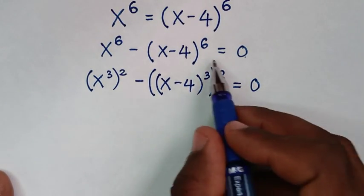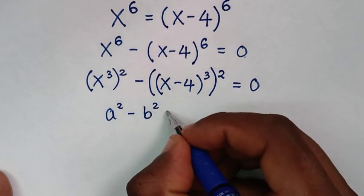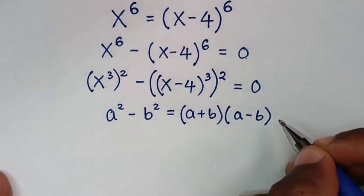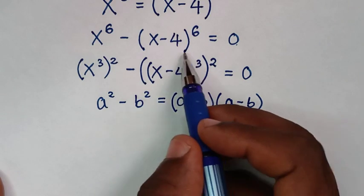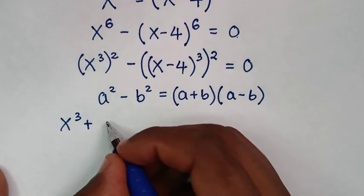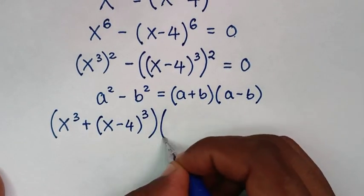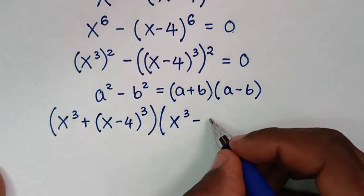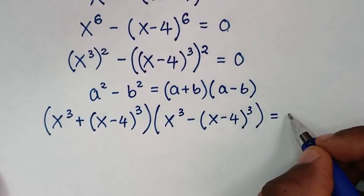Now this is in the form of a perfect square, so we'll apply the difference of squares rule: a squared minus b squared equals (a plus b)(a minus b). Applying this, it will be (x power 3 plus (x minus 4) power 3) times (x power 3 minus (x minus 4) power 3) is equal to 0.